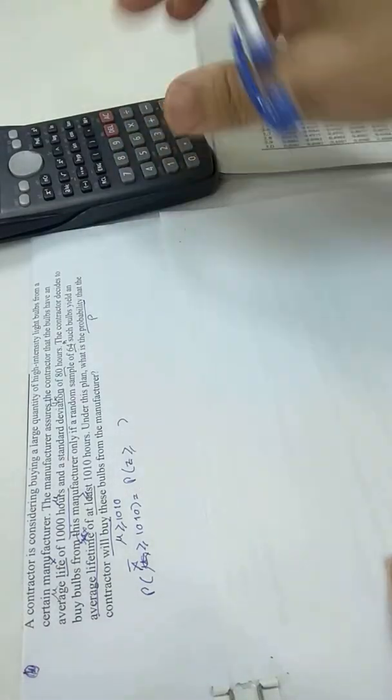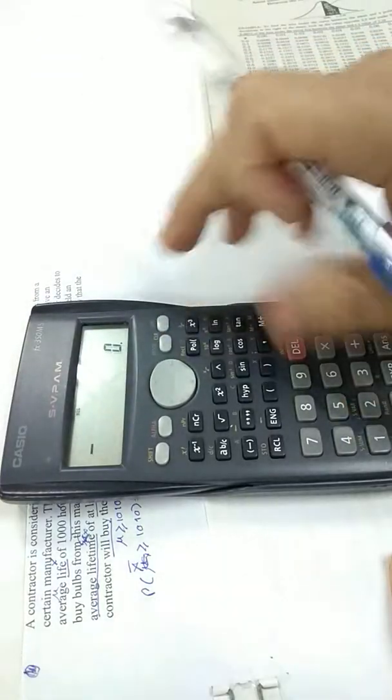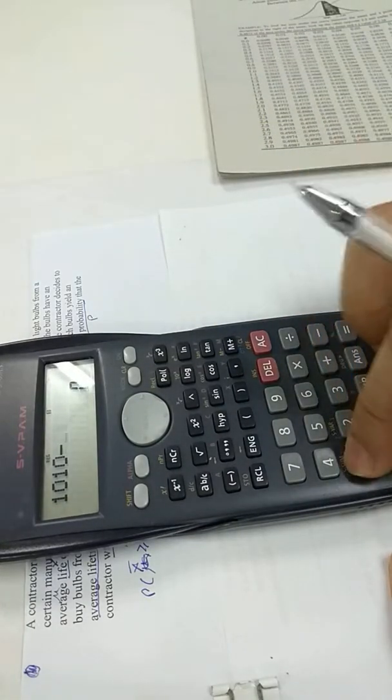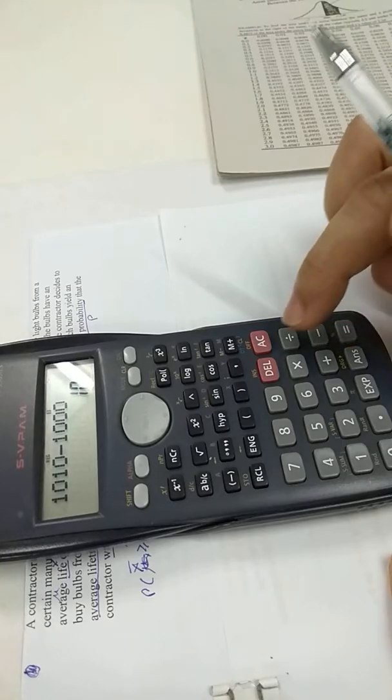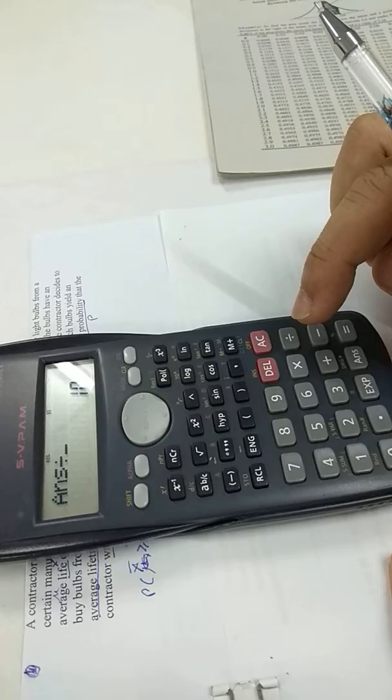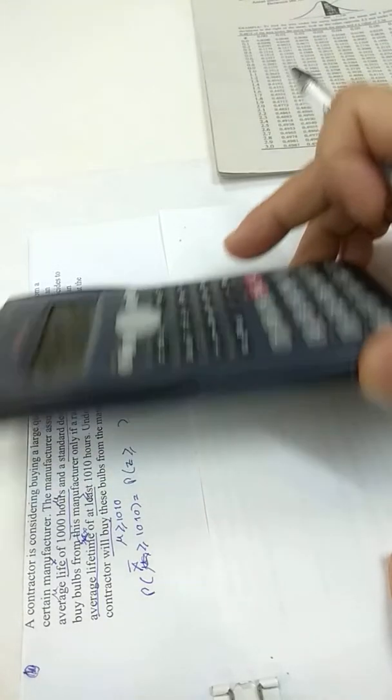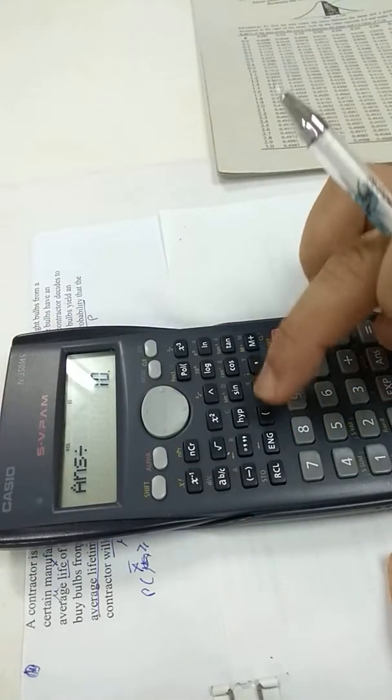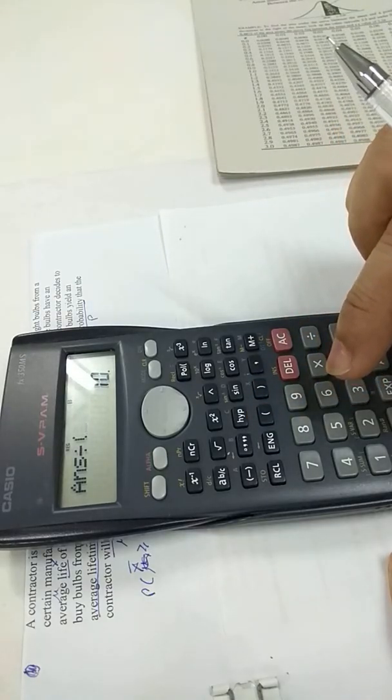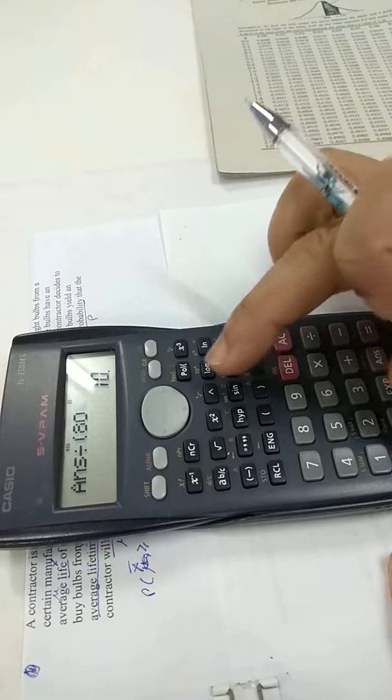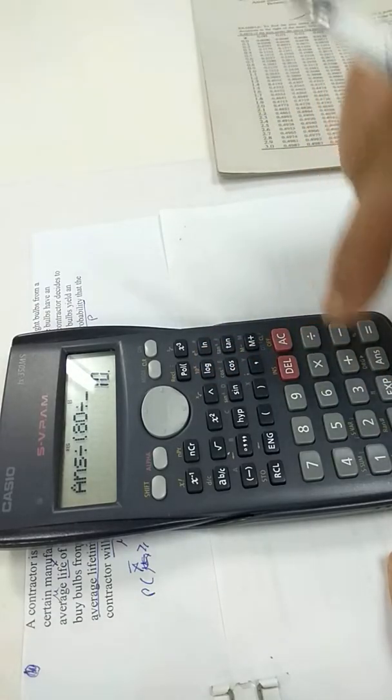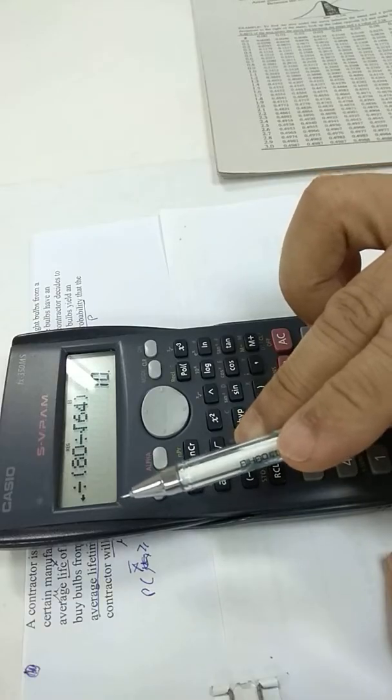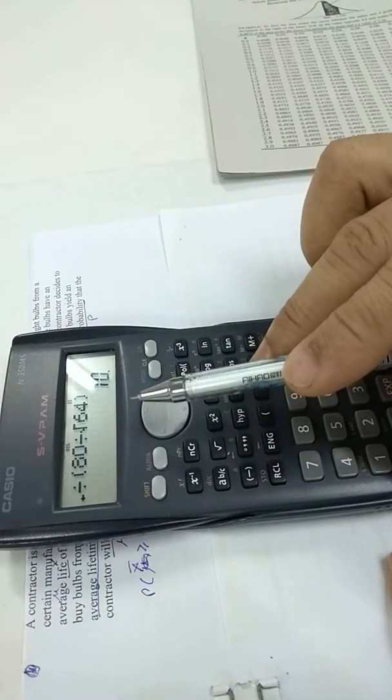The formula is X bar, 1010 minus 1000 divided by sigma, 80, divided by sigma over root N, 80 over root 64. So this is X minus mu divided by sigma by root N.